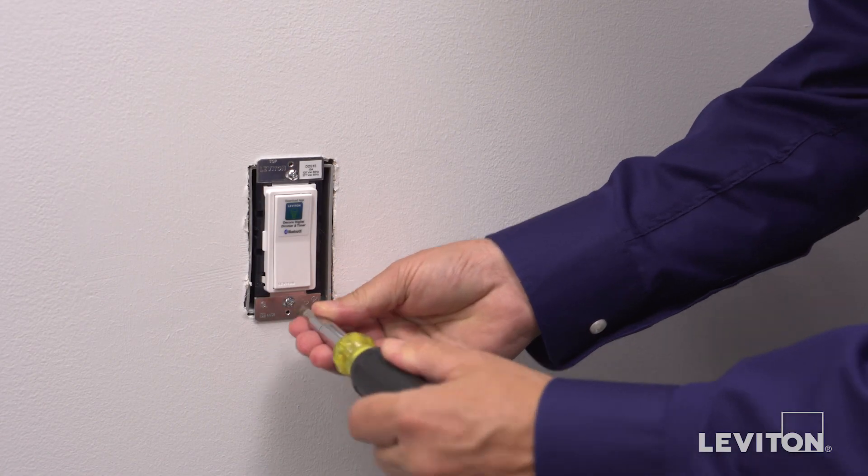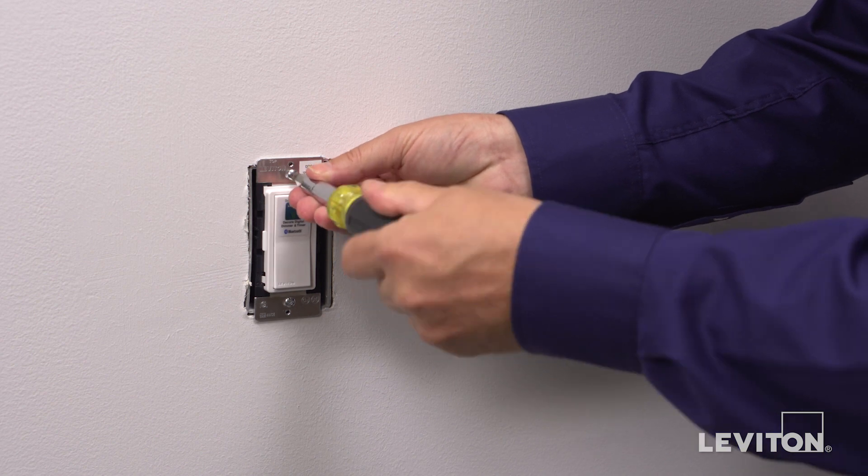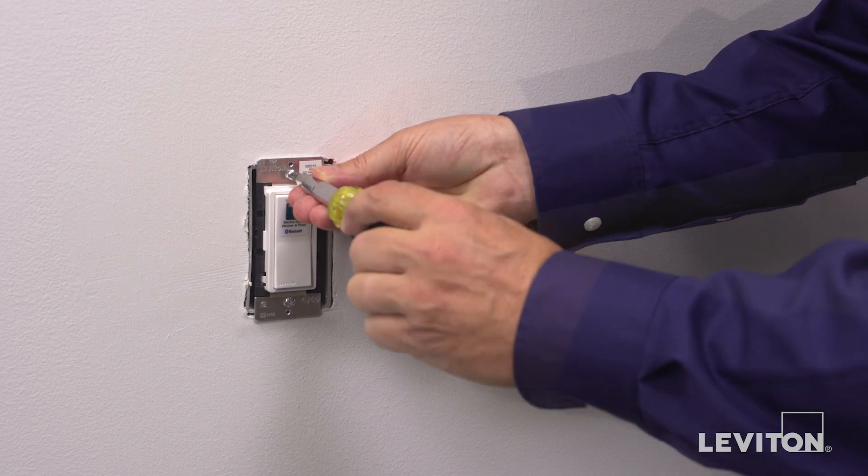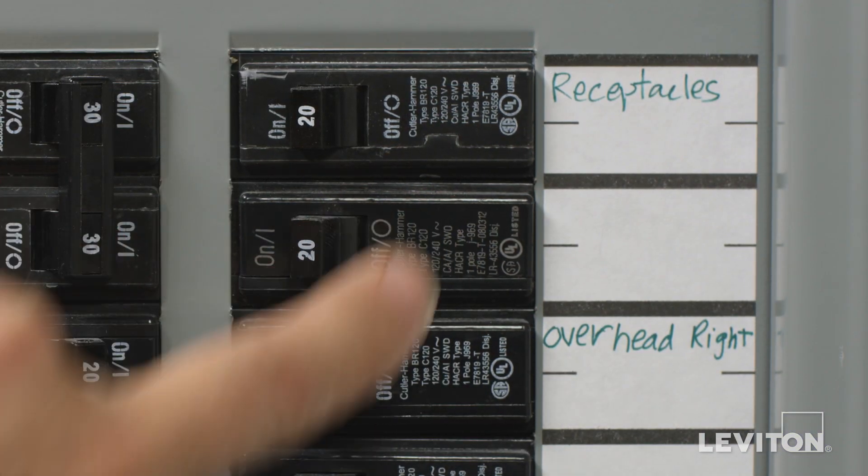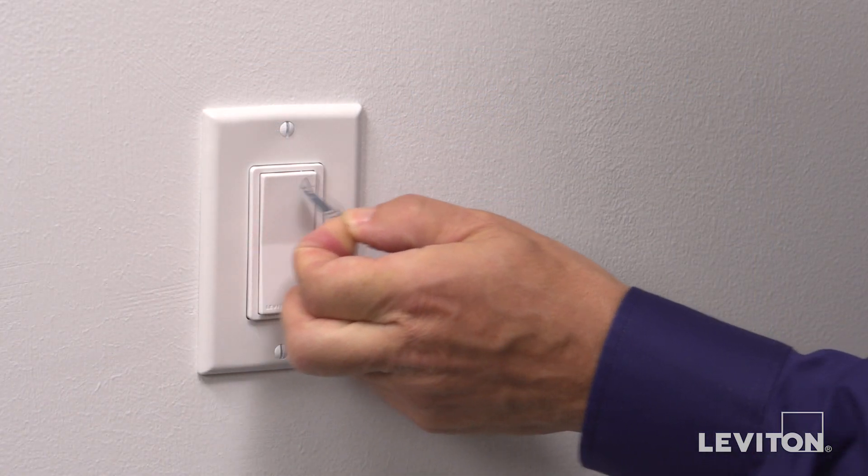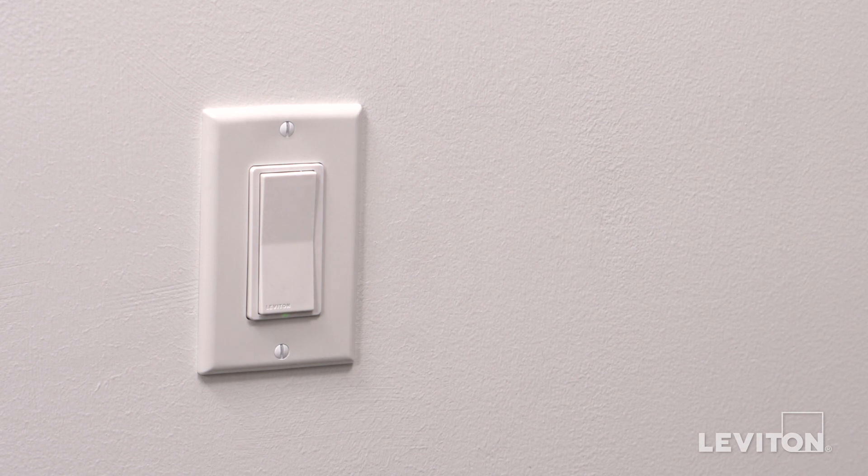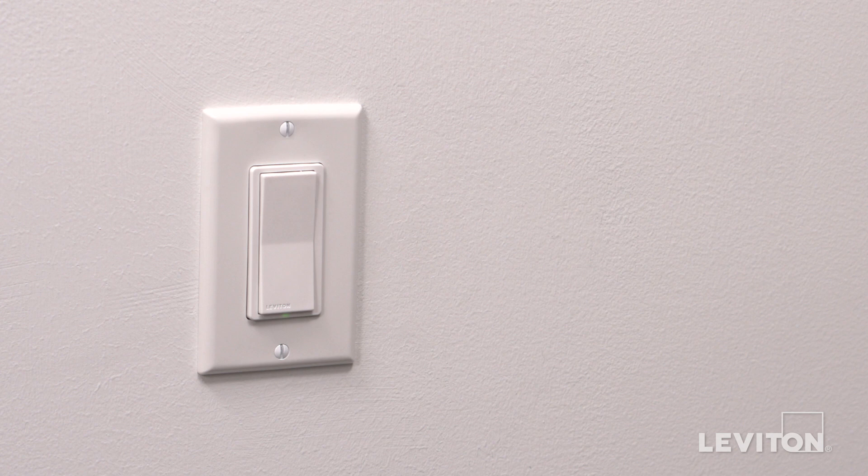Complete the installation by tightening the mounting screws into the wall box. Install the wall plate. Switch power back on at the circuit breaker. Your Leviton DDS15 Decora Digital Switch with Bluetooth technology is ready for use.